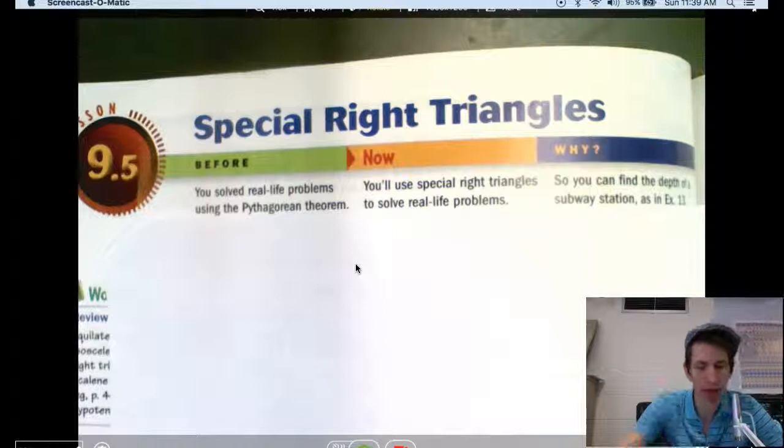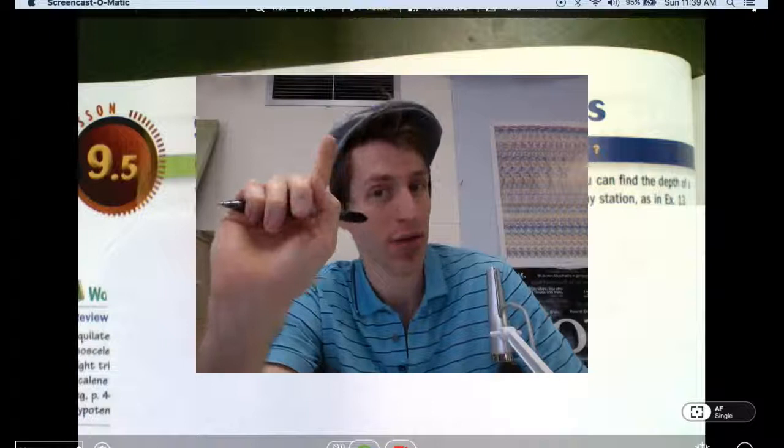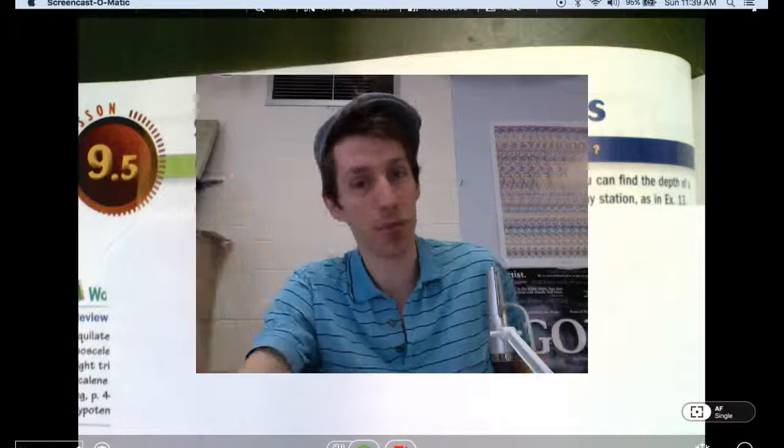I like this lesson today because we're talking about shortcuts. Who doesn't like a good shortcut, right? So, there are some triangles, some special triangles, not just any right triangle, but some special right triangles that, if you encounter these types of triangles, which are pretty common, you can figure out the side lengths. You can solve the triangle much more quickly than using the Pythagorean theorem. So, let's check this out.